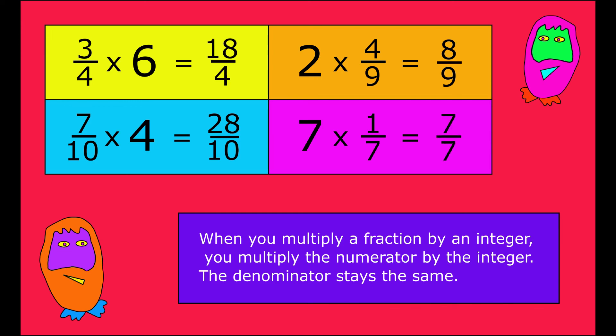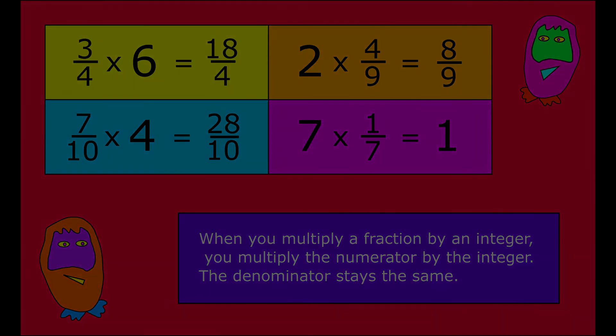And seven multiplied by a seventh. Well, seven times one is seven, so seven-sevenths is the same as one whole. Okay, hope that helps. Good luck.